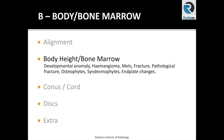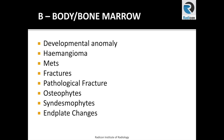Next is body height. In B for body height, we will have a quick look at developmental anomalies, hemangiomas, mets, fractures, pathological fractures, osteophytes, syndesmophytes, and end plate changes.